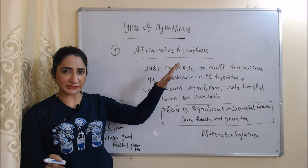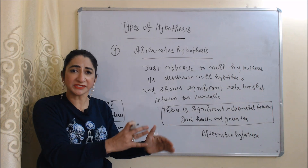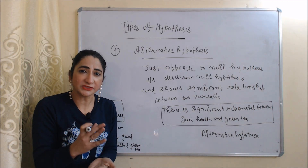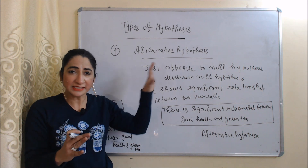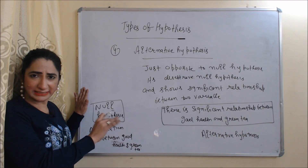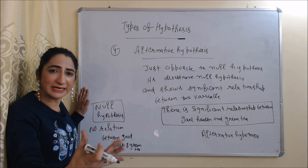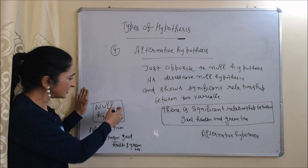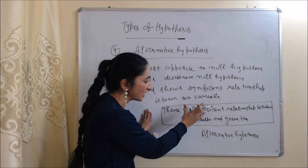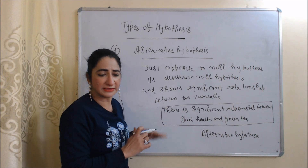Now we will see alternative hypothesis. Alternative hypothesis is just opposite to null hypothesis because it shows a significant relationship between two variables, and it disproves the null hypothesis. For example, my null hypothesis was that there is no relationship between good health and green tea. But when I asked my friends, relatives, and many other people, they told me their health improved after taking green tea. That's why I reject my null hypothesis and form a new one showing a significant relationship between good health and green tea — this is the alternative hypothesis.